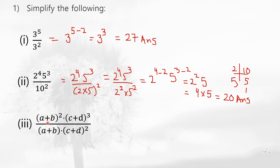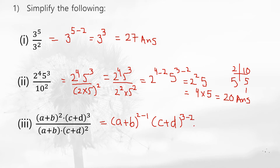The next question has bases in brackets — (a+b) and (c+d). Since the same bases appear in numerator and denominator, we subtract the powers: (a+b) to the power 2 minus 1, giving (a+b) to the power 1, which is simply (a+b). This is the answer.